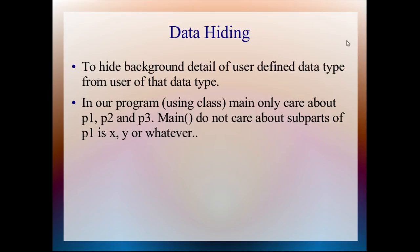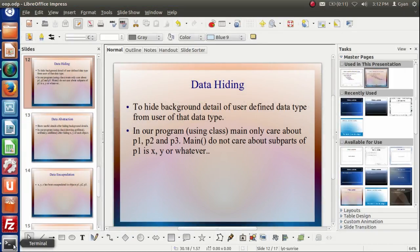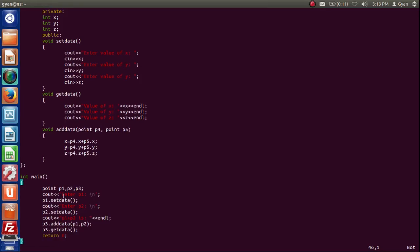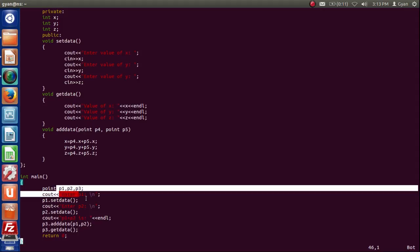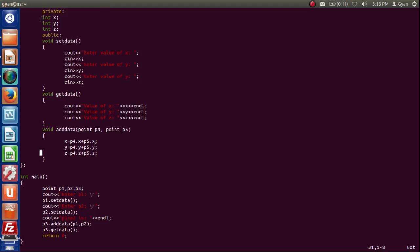This is called data hiding. If you look at our program, you see when I write here p1.x, it shows an error because x is defined as private.